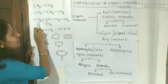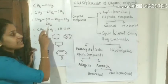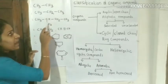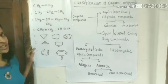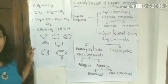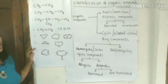For example: CH3, CH3, CH2, and CH3. Acyclic or open chain or aliphatic compounds are classified into two types: straight chain and branched chain compounds.